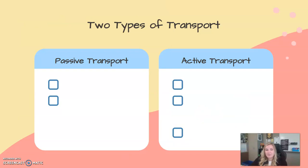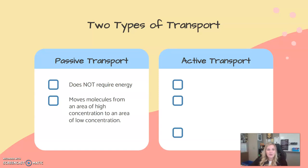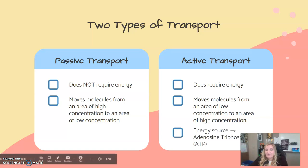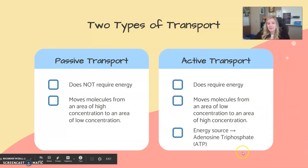There are two types of transport: passive and active. Passive transport does not require energy and moves molecules from an area of high concentration to low concentration. Active transport does require energy and moves molecules from low concentration to high concentration — it needs an energy source, specifically ATP, also known as adenosine triphosphate. We're going to talk about passive transport today and active transport next week.